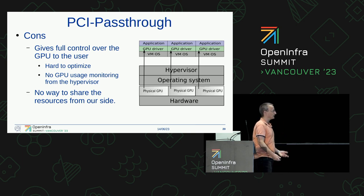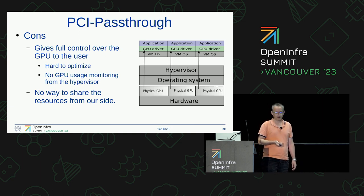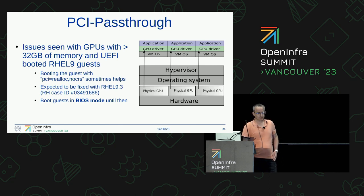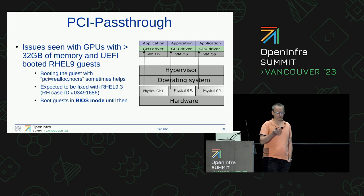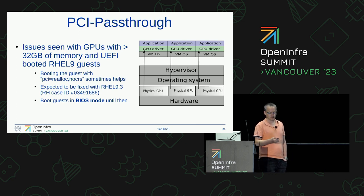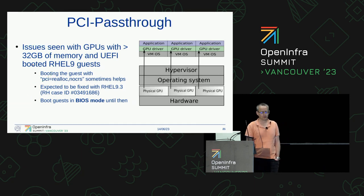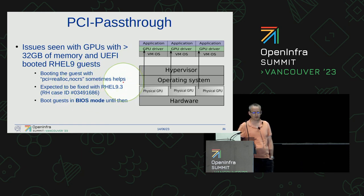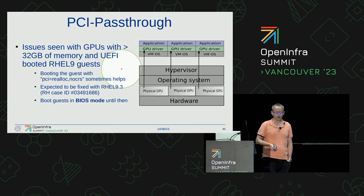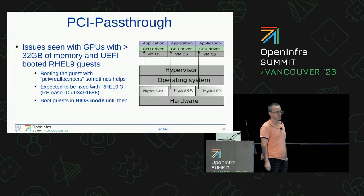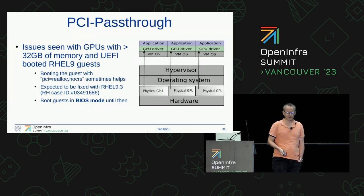The cons is that it gives full control over the GPU to the user, meaning we have no idea what the user is doing, whether the resources are efficiently used. Since these resources are very scarce and expensive, it's not optimal for us. There's no way for us to share the resources in case they fall idle for whatever reason. We have seen some issues — when we tried to move from CentOS 7 to 8, we changed all our default images from BIOS to UEFI boot, and at that point we started to see issues with GPUs which have more than 32 GB of memory. That fix is coming with Red Hat 9.3. Fortunately there's a working workaround, which is just to boot the guests in BIOS mode.